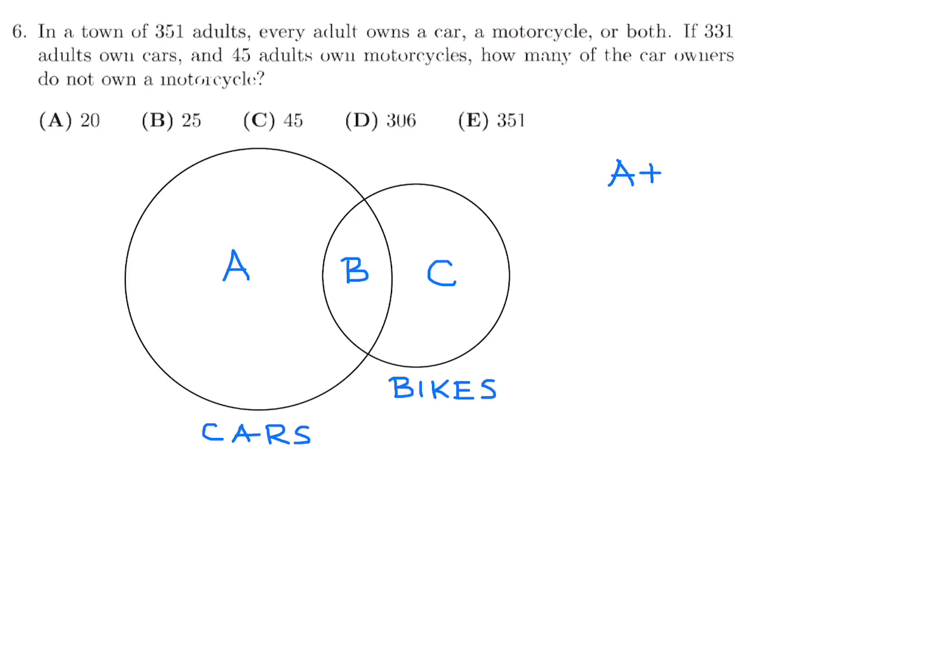So the question tells us that there's 331 people in the town. So all of those numbers together will be 331 added. And then the number of car owners, A plus B, they tell me this should be 351. The total number of people in the town is 351. And the number of car owners they tell me is 331, so that's A plus B. And then the number of bike owners, B plus C, is 45. So our task in this question is to figure out how many of the car owners do not own a motorcycle, and that is this number right there, A. So we have to find A.